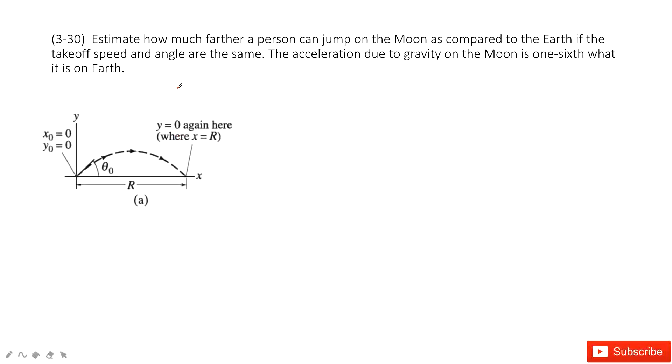In this one, it asks you to find how much the displacement in horizontal a person can jump on the moon as compared to the earth. If the takeoff speed and angle are the same, the acceleration due to gravity on the moon is one-sixth of what is on the earth.